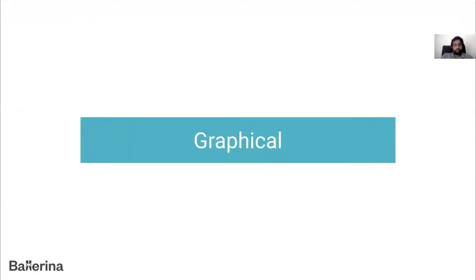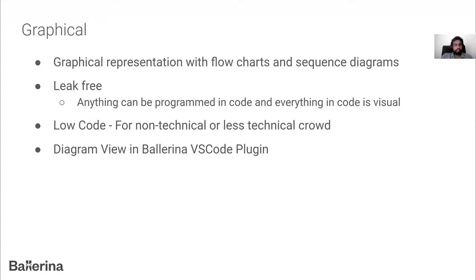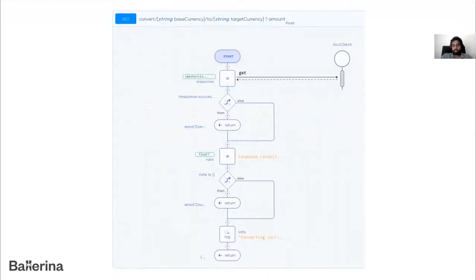Ballerina is graphical — it has a graphical representation using flow charts and sequence diagrams, and it's lossless, meaning anything in Ballerina code can be visualized and vice versa. This low-code aspect is useful for non-technical or less technical people to understand code logic or even do programming. This is a simple example of a flow chart of a method.